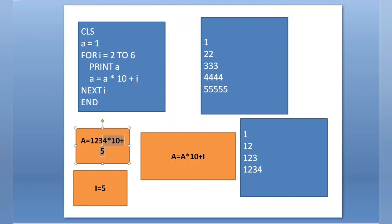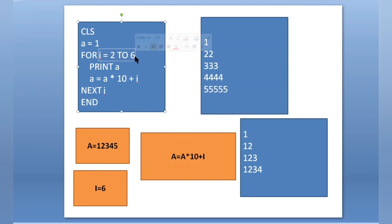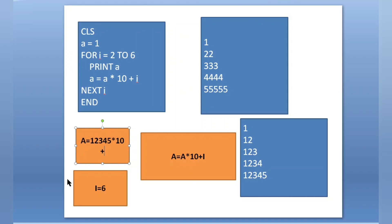After that calculation, a becomes 12345. Next i — i is incremented by 1 to 6. It goes to the for loop and checks: is 6 in the range 2 to 6? Condition is true. PRINT a — the value of a is 12345, so 12345 is printed. Then again, a = a * 10 + i: 12345 * 10 + 6 gives 123456.